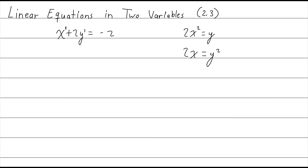It's possible that it looks a little strange, like 2x plus y equals 3x minus 1. That would technically be considered a linear equation because, if you check the exponents, they're all 1, 1, and 1. So as long as you have x and y and all the exponents are 1s, you are looking at a linear equation.